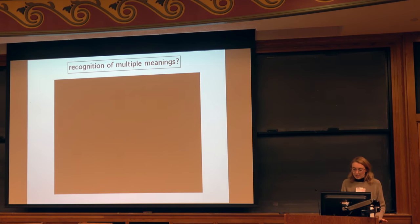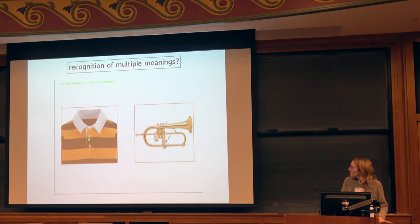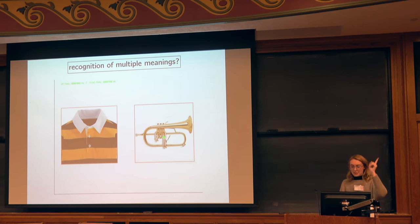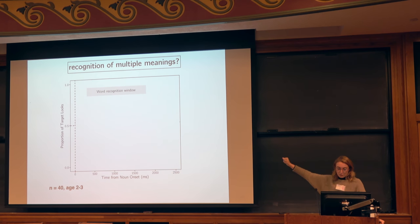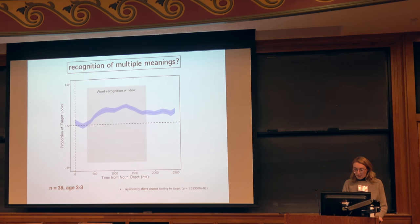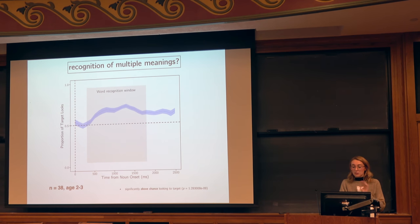I can show you a trial — I will live narrate it. Look at the collar. So what I'm going to show you is the proportion of looks to target that our participants made. The window of interest is the well-known word recognition window from past literature, especially from Ann Fernald's lab. What we can see is that kids are above chance and that this is reliable. You might wonder whether they're able to do both of these meanings — maybe one meaning per word is much more frequent than the other. We actually found no significant difference between the higher and lower frequency meanings within each pair for each kid, and we got ratings from parents about the relative frequency of these two senses.